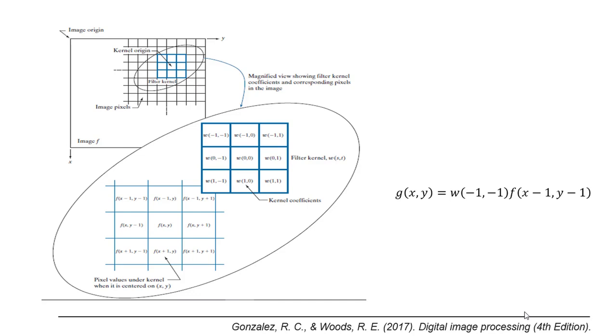This figure shows how to apply spatial filtering using a 3×3 kernel. At any point (x,y) in the image, the response g(x,y) is the sum of products of the kernel coefficients by the image pixels underneath the kernel.